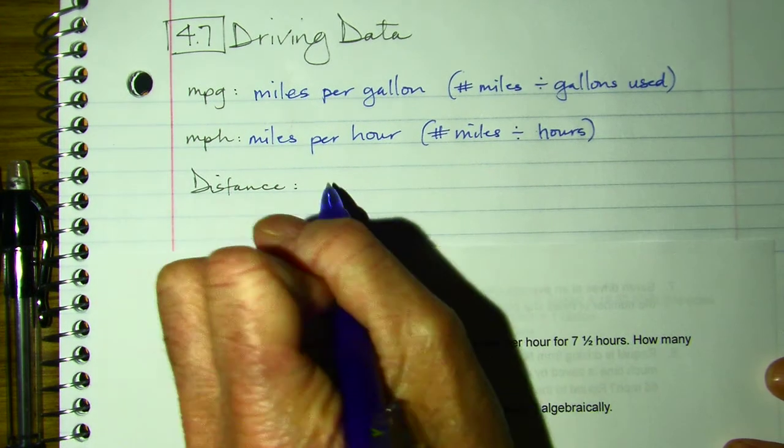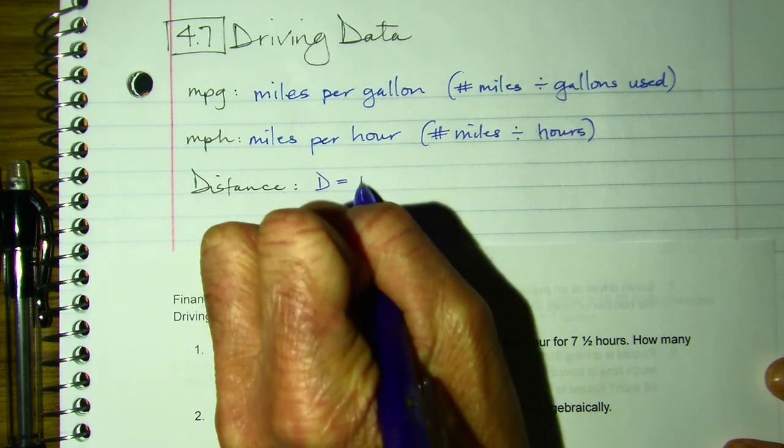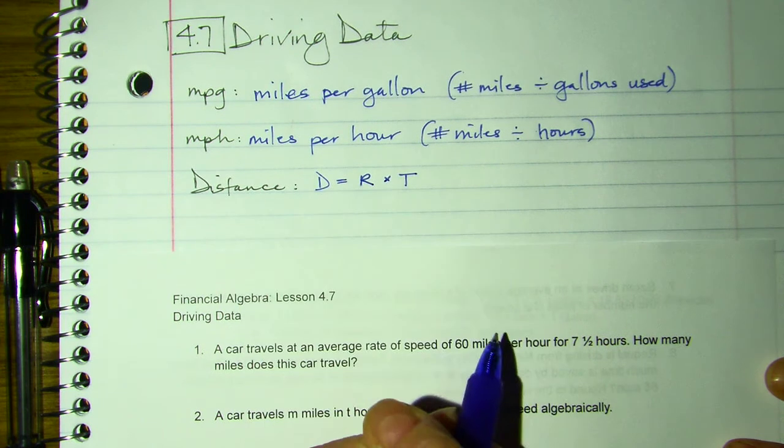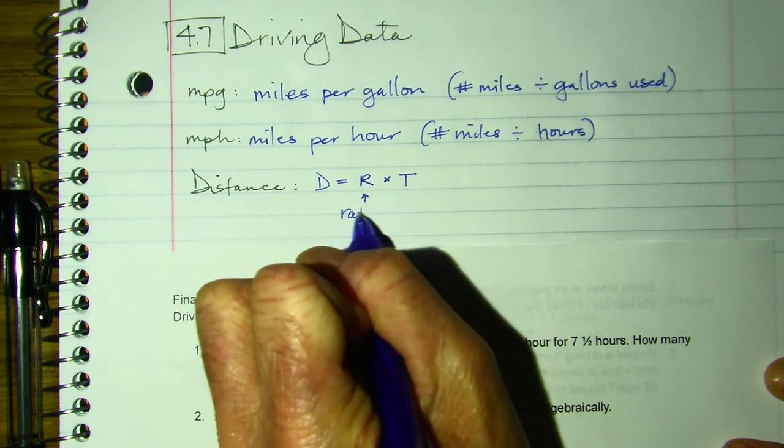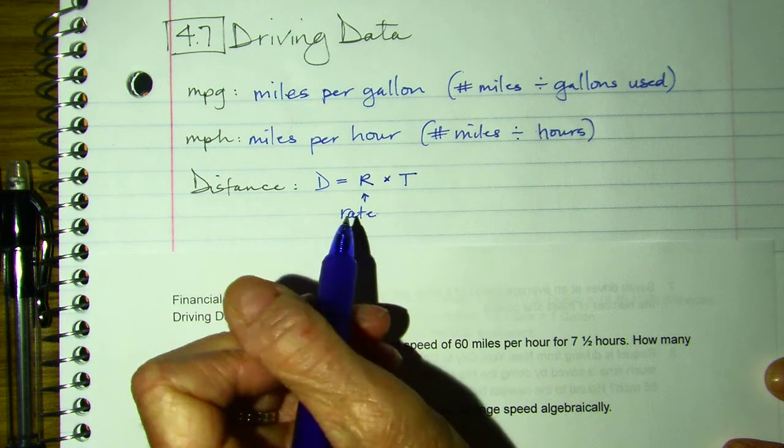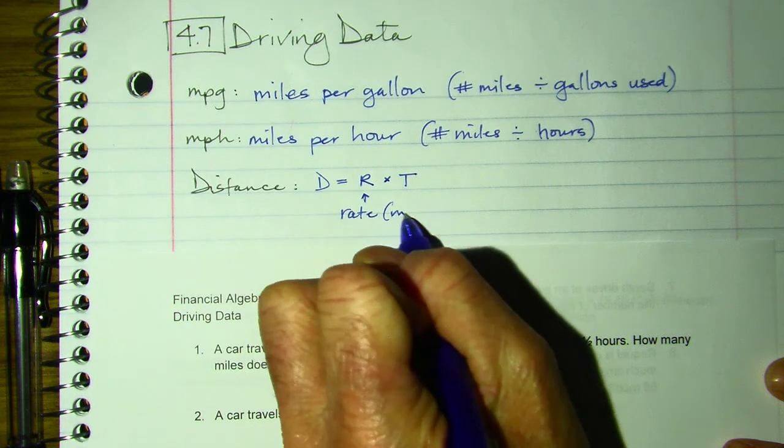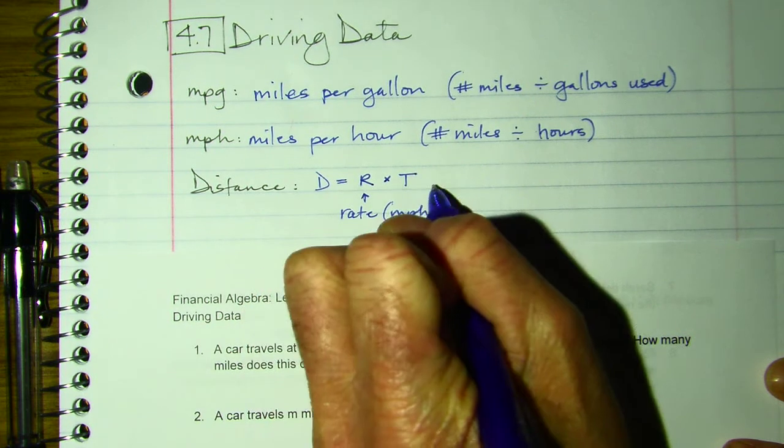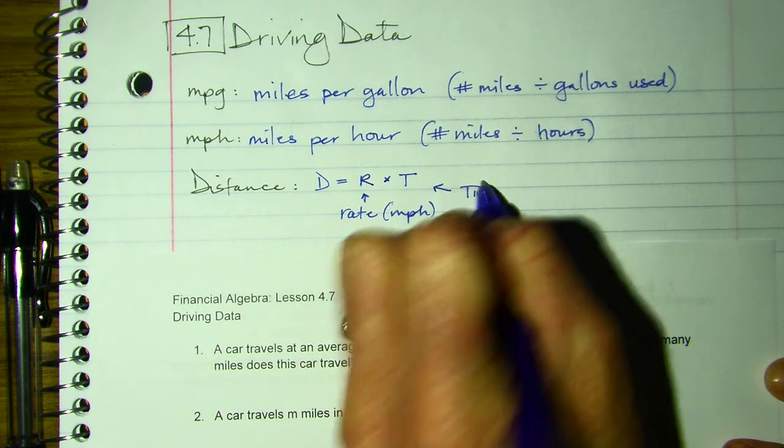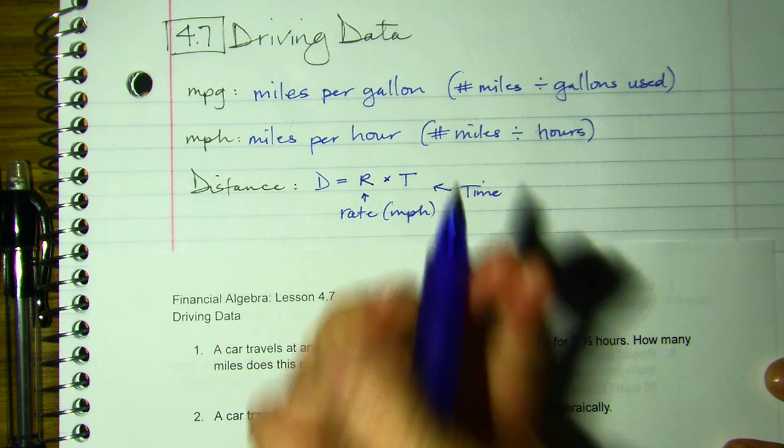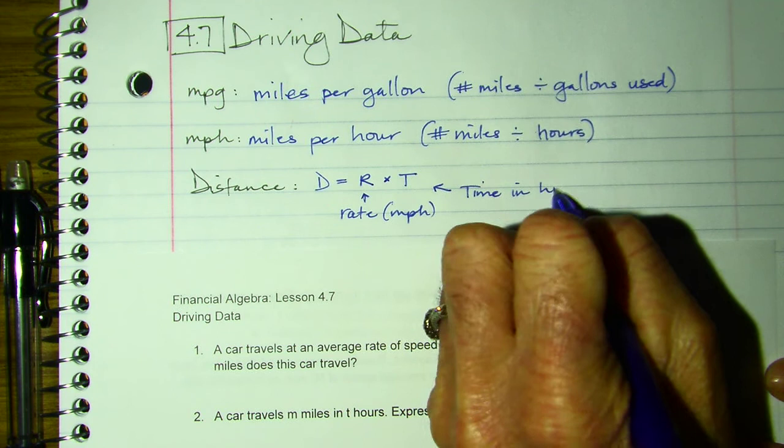Distance would be our rate times the time it took. So R is rate, that's usually miles per hour, and then T stands for time, usually in hours. T should be time in hours.